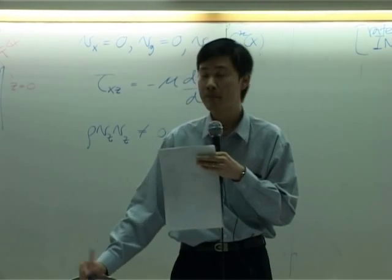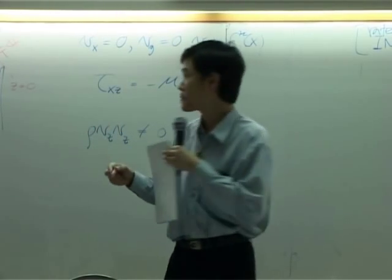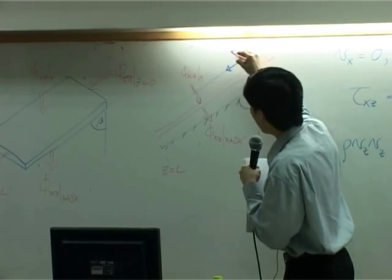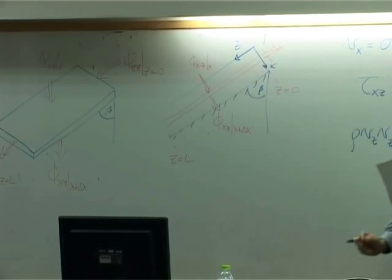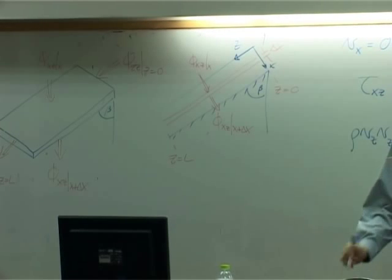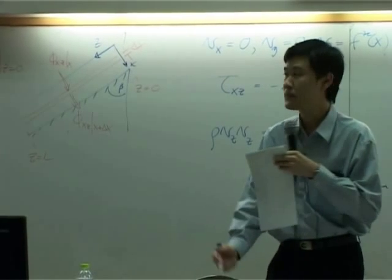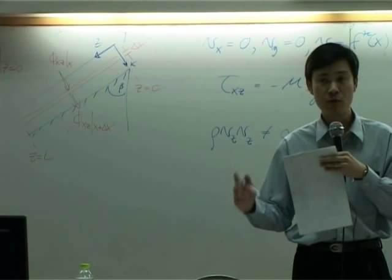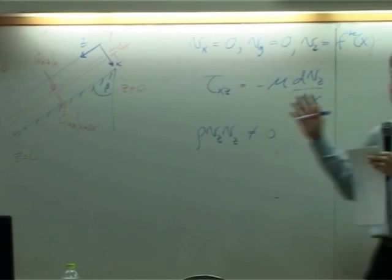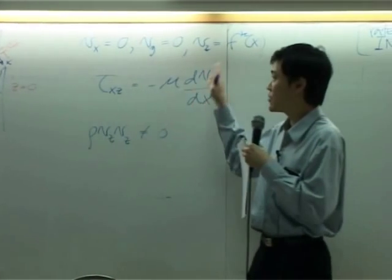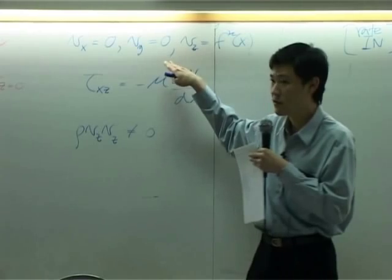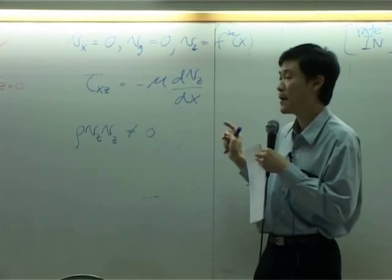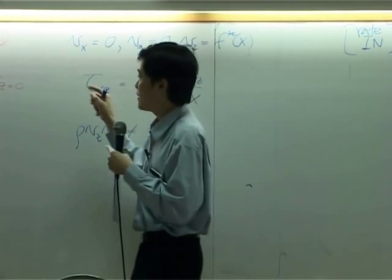The example is water film flowing on an inclined plane. We discussed that in the system there should be velocity, and velocity is divided into three components: vx, vy, and vz. In the last class we determined that vx is zero, vy is zero, and vz is not zero and it is a function of x.